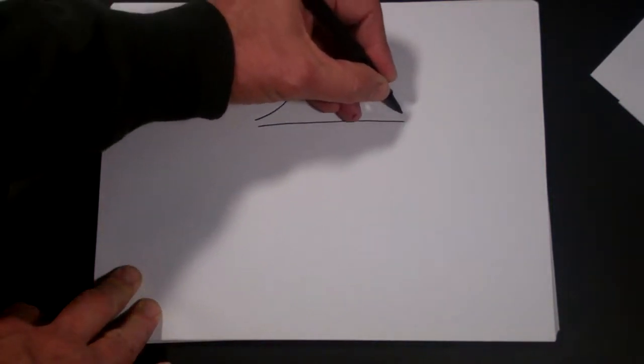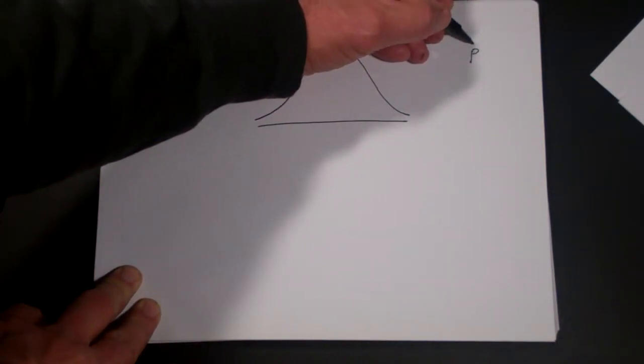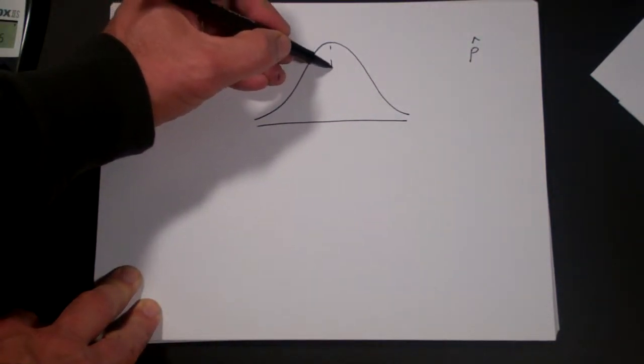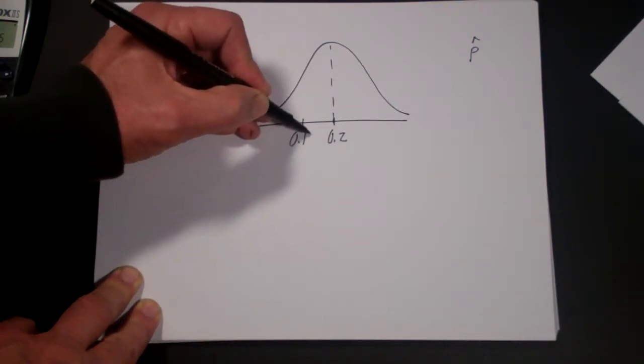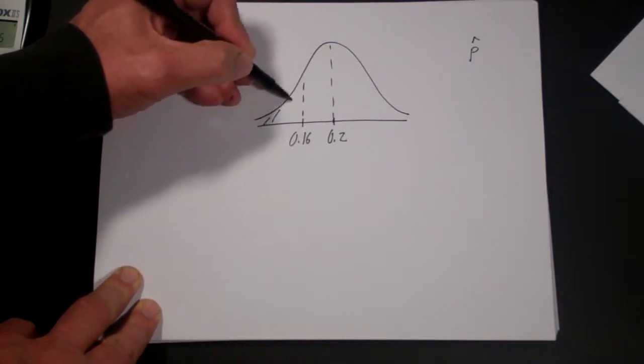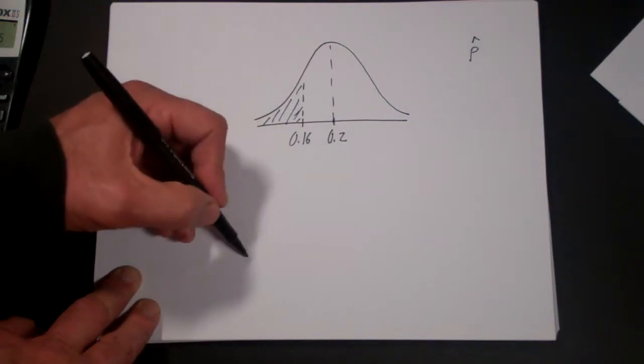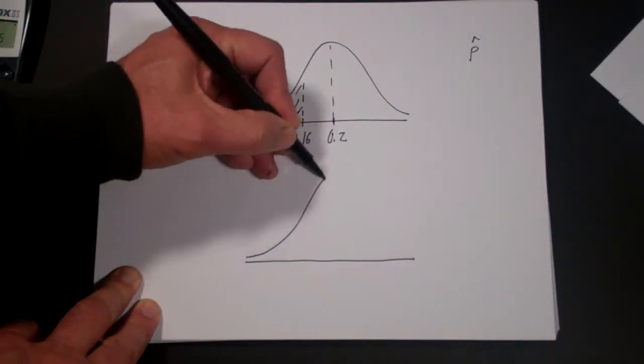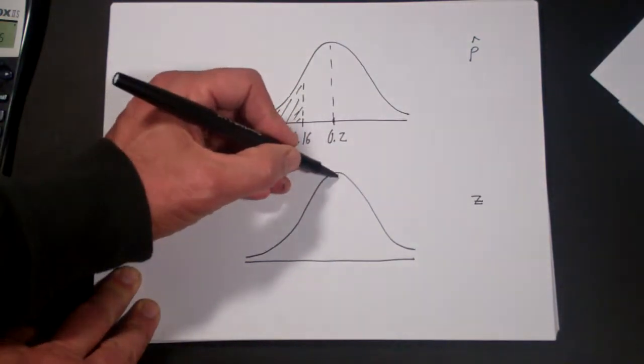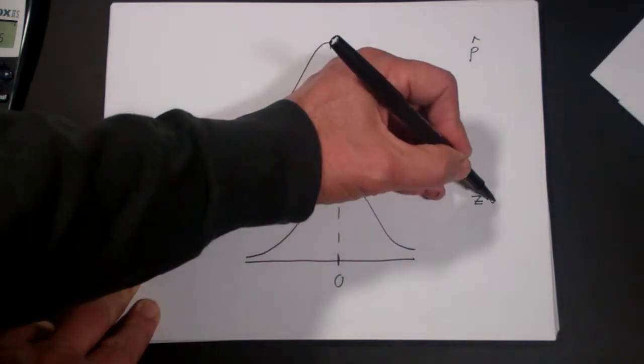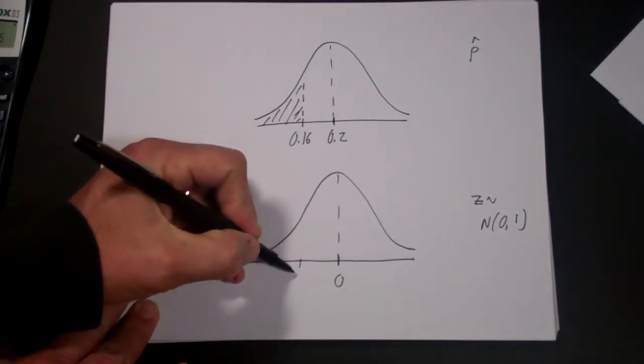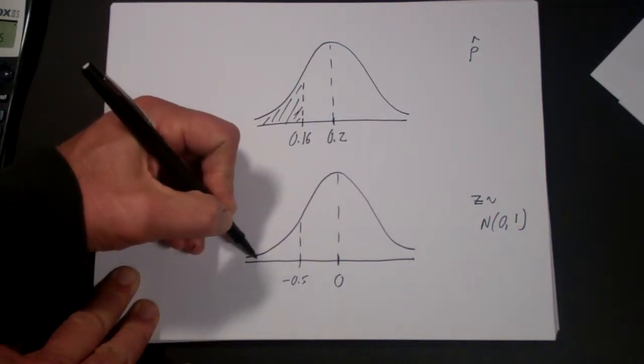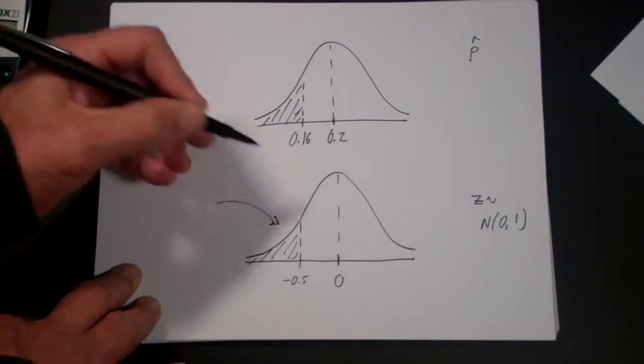Now, a real common way to analyze this is to draw two normal distributions. This is the distribution of the estimator p hat, where the mean here is the true value 0.2, and we want to find the probability that you're less than 0.16. In the z, the equivalent z-distribution, this will be 0—remember, z-distribution is a normal distribution with mean 0 and standard deviation of 1. And we want to do minus 0.5 and we can find the area to the left.